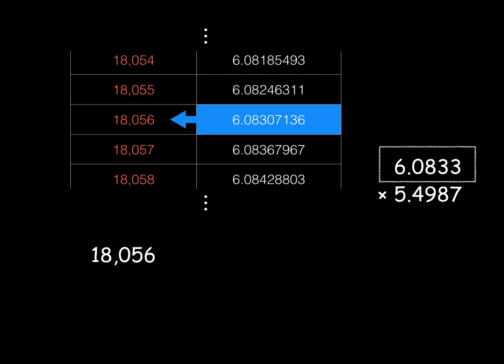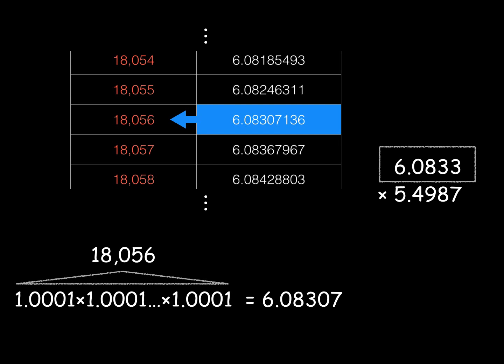Now, I just want to stop here and point out how crazy it is the amount of work Yost had to do to make this table. He actually had to sit there with a quill pen and a bunch of paper and multiply by 1.0001 18,056 times just to get this far in the table. This was where the brute force came in.